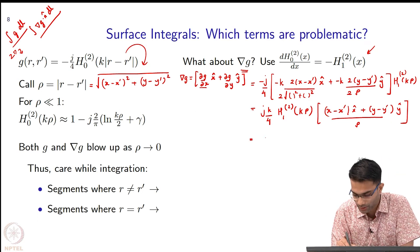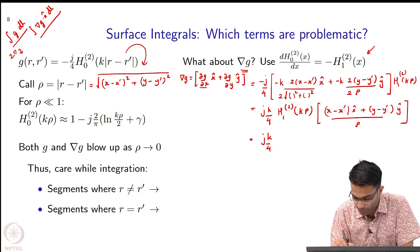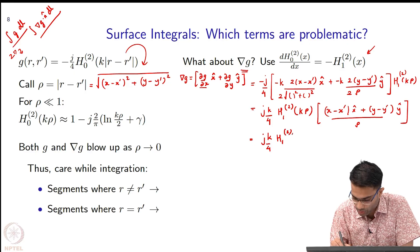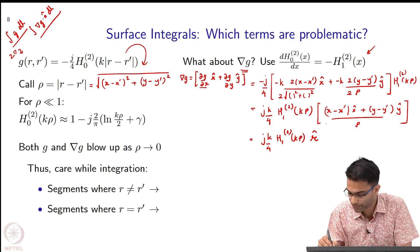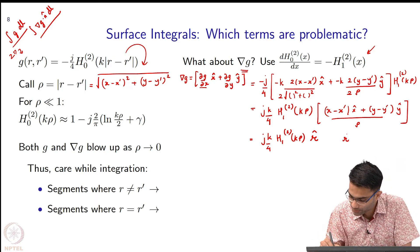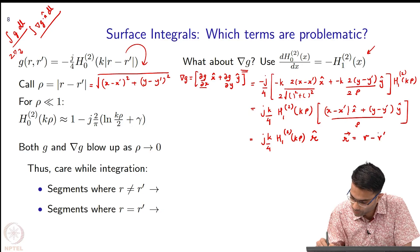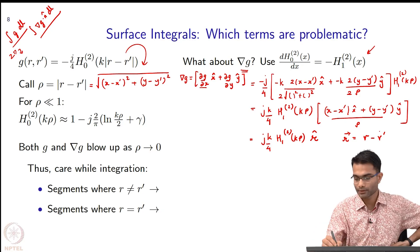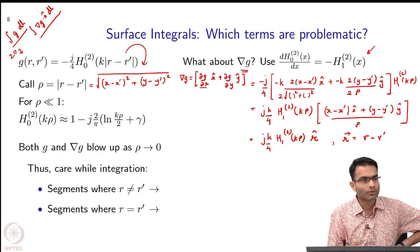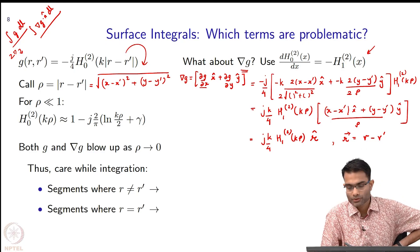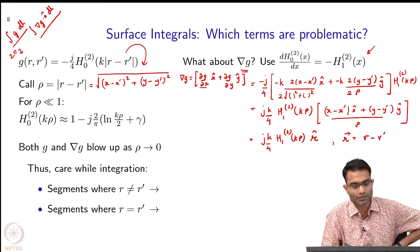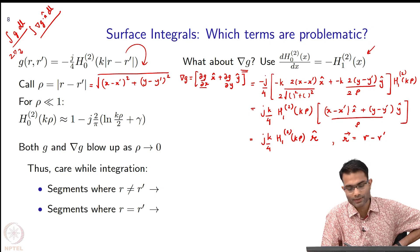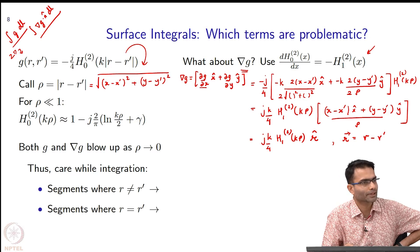Very simply this just becomes J k by 4 H_1^(2) k rho, and this is the usual notation, a different script for r where r is. This just simplifies the notation. We started with G which was H_0^(2) and I got grad G is H_1^(2), not very complicated.